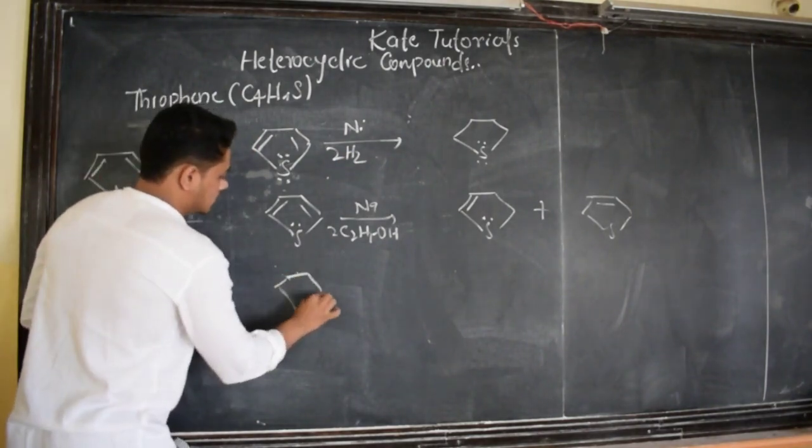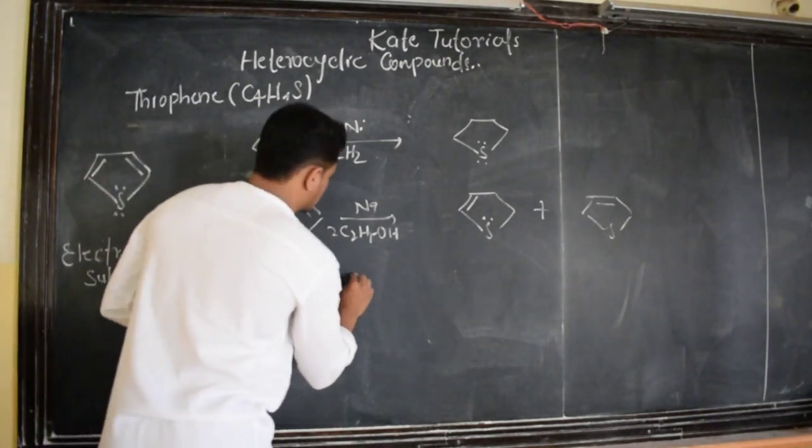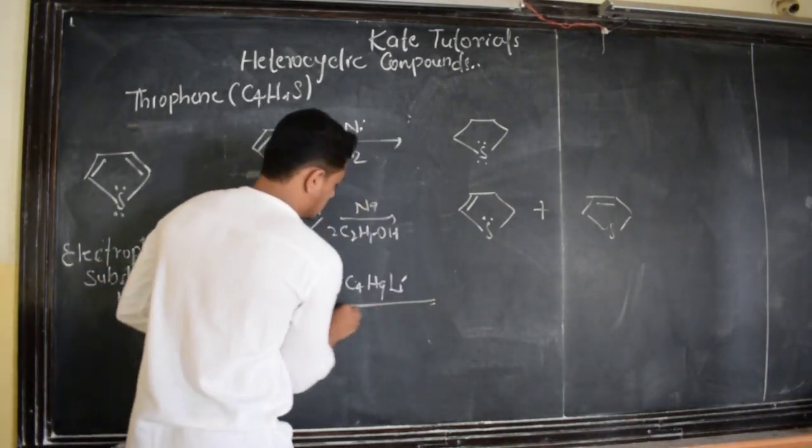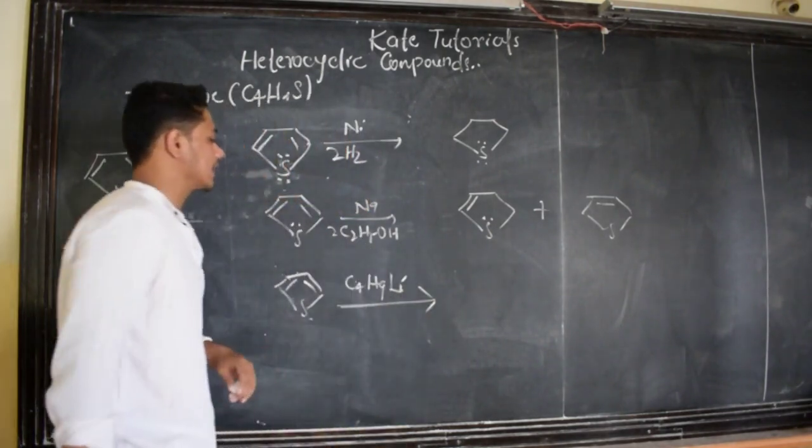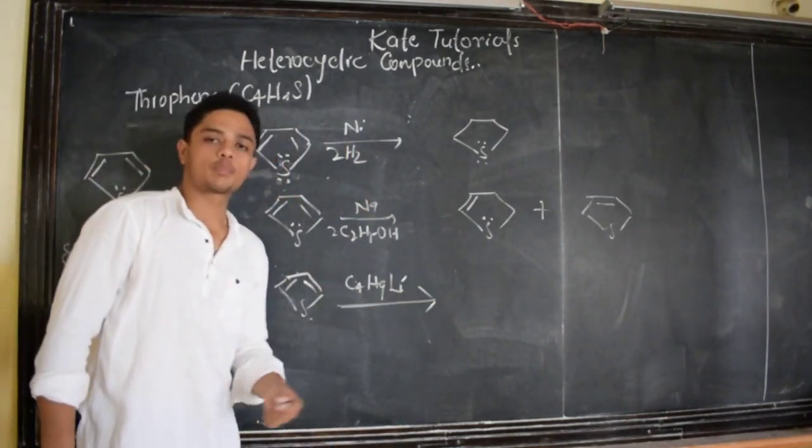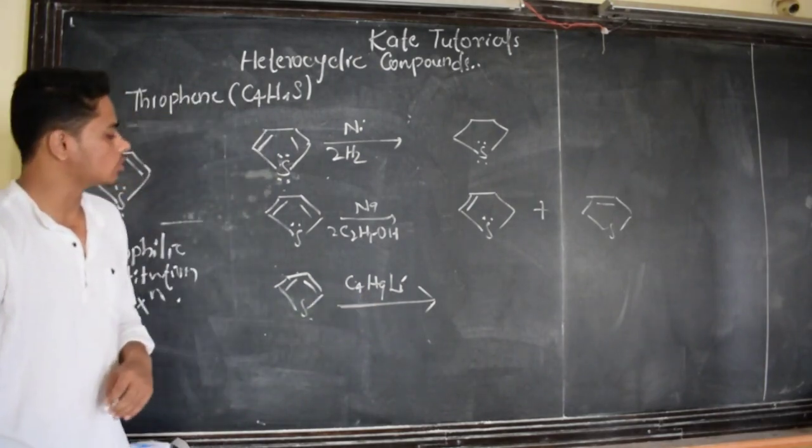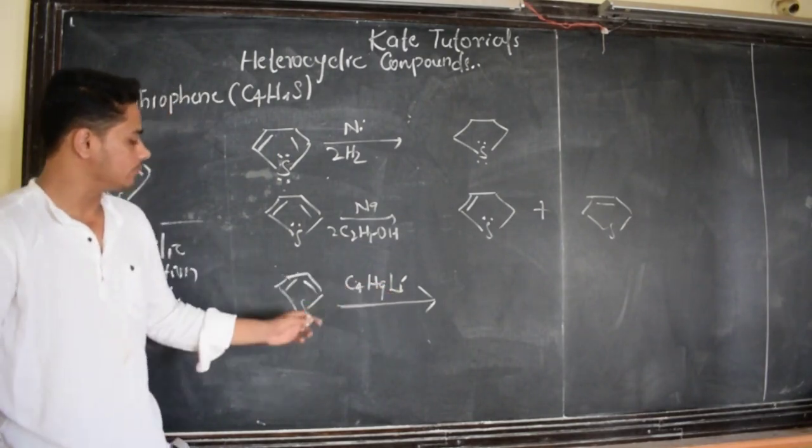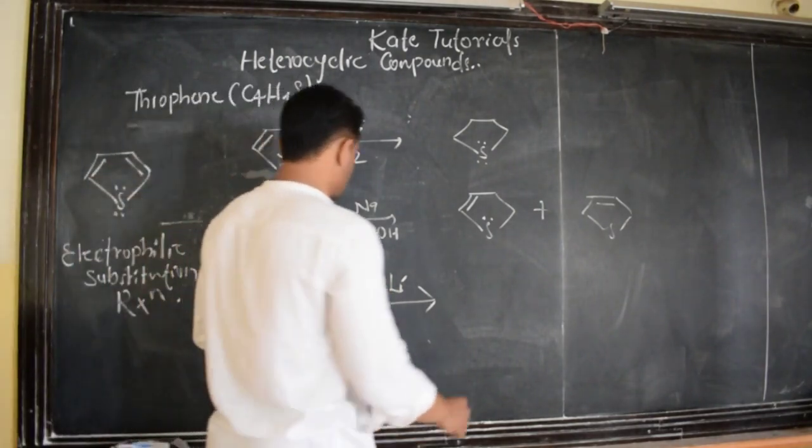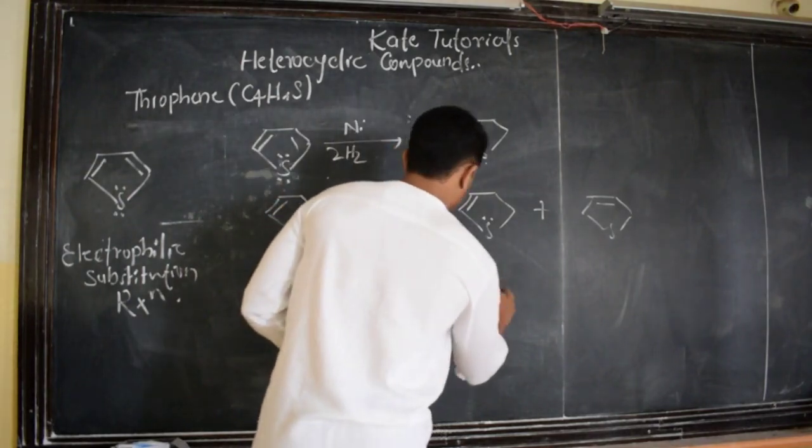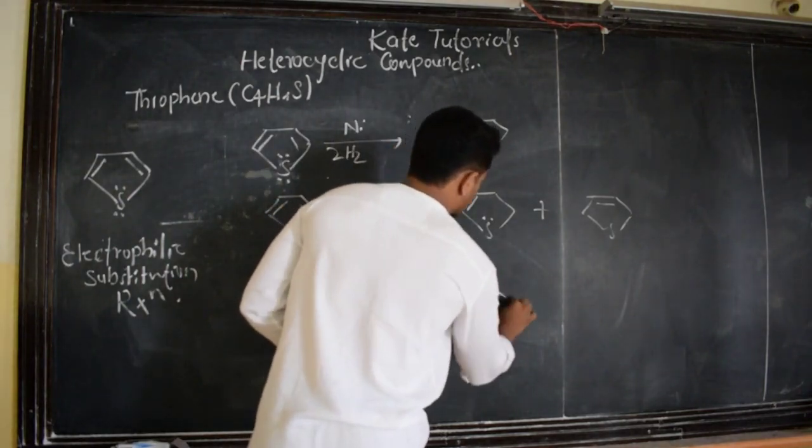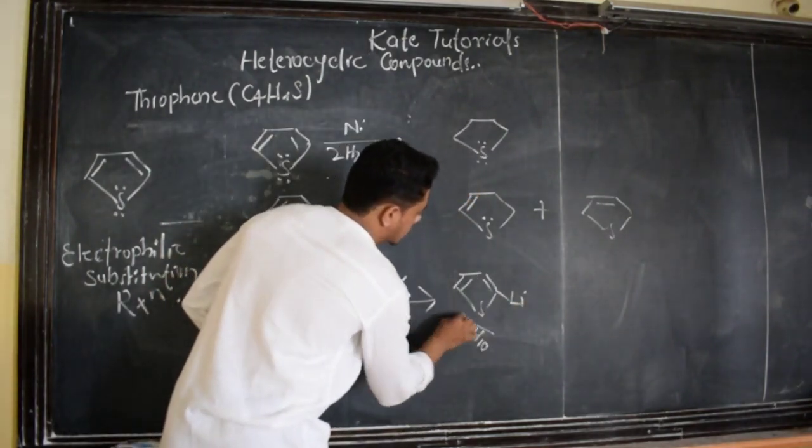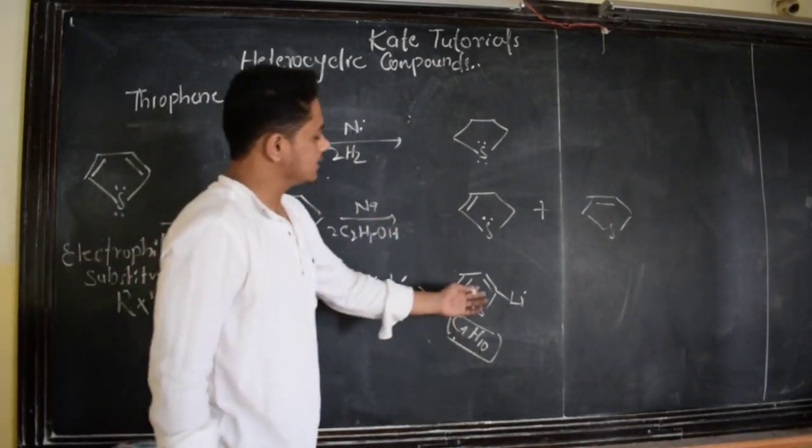When the same thiophene is treated with compounds like C4H9 lithium, these are called organometallic compounds. Organic group is there and metal group is there. Here we are going to get, this hydrogen will be replaced by C4H9 and that hydrogen will attach to lithium. So we are going to get this compound and we are going to get C4H10, n-butane.